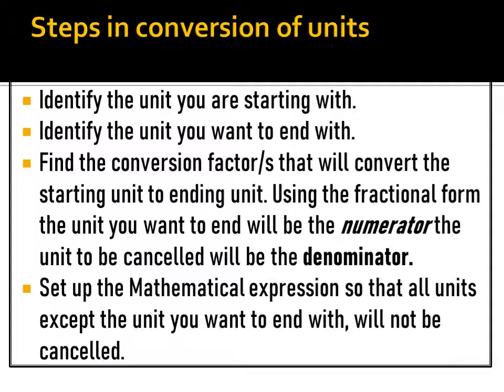Here are the steps in conversion of units. First, identify the unit you are starting with. Second, identify the unit you want to end with. Third, find a conversion factor or factors that will convert the starting unit to the ending unit using the fractional form — the unit you want to end with will be the numerator and the unit to be cancelled will be the denominator. Fourth, set up the mathematical expression so that all units except the unit you want to end with will be cancelled. Always remember: to cancel a unit, it must appear in both numerator and denominator — you cannot cancel a unit if it is numerator-to-numerator or denominator-to-denominator.